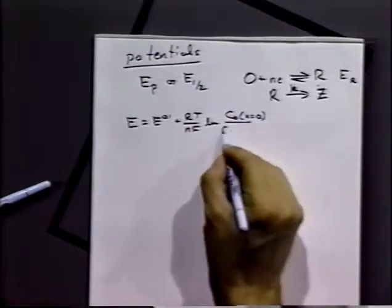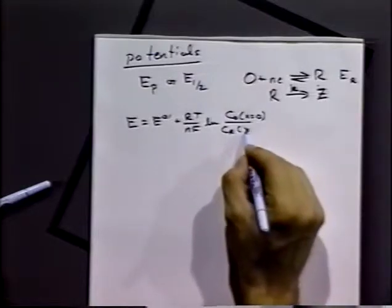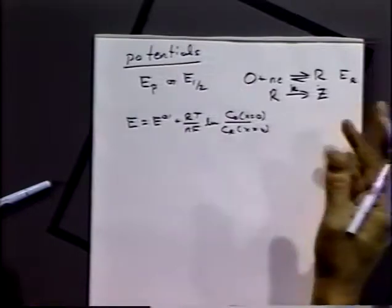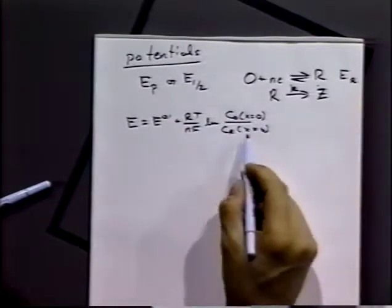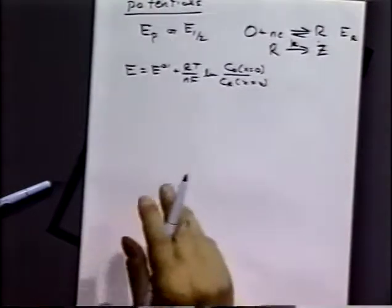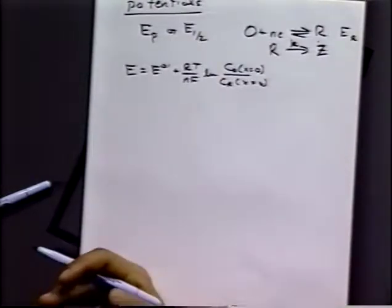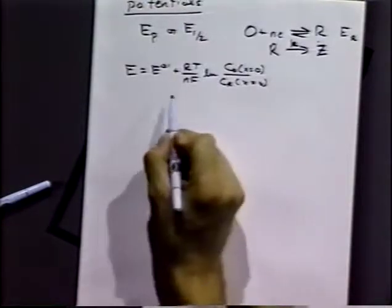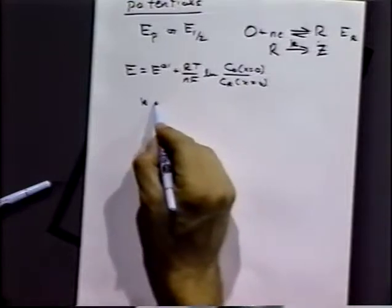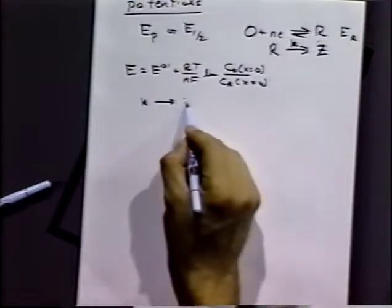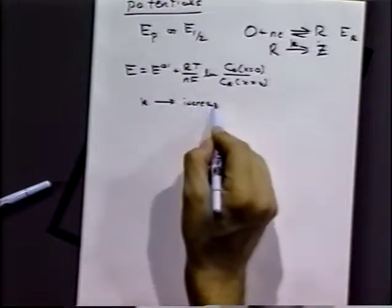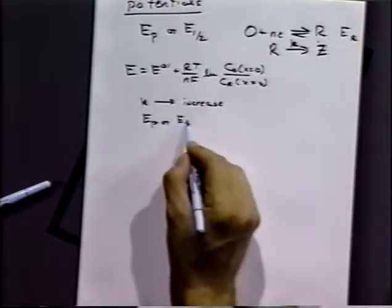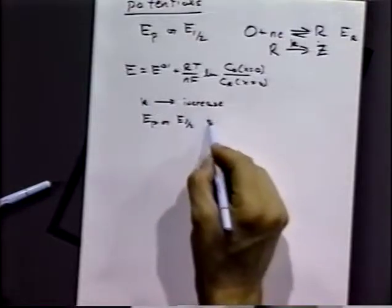So it's the concentration of O over the concentration of R at the electrode surface. Now when we have a chemical reaction, C sub R is going to be reduced at any particular potential because of the chemical reaction that's occurring. So we're going to shift the wave to more positive potentials. So as K increases, EP or E one half will be more positive.